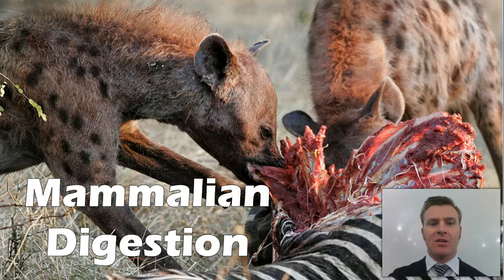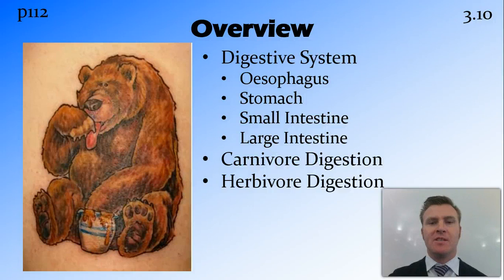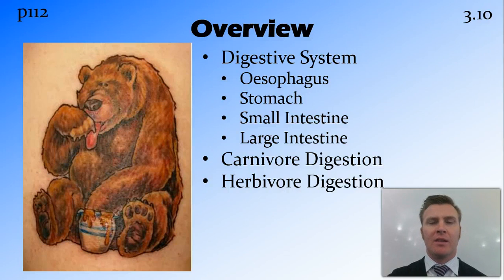In this video we're going to look at mammalian digestion. We're going to look at the digestive system, and in particular we're going to start at the human digestive system, consisting of the esophagus, stomach, small intestine, and large intestine. We're then going to compare this to the digestive system of carnivores and the digestive system of herbivores.